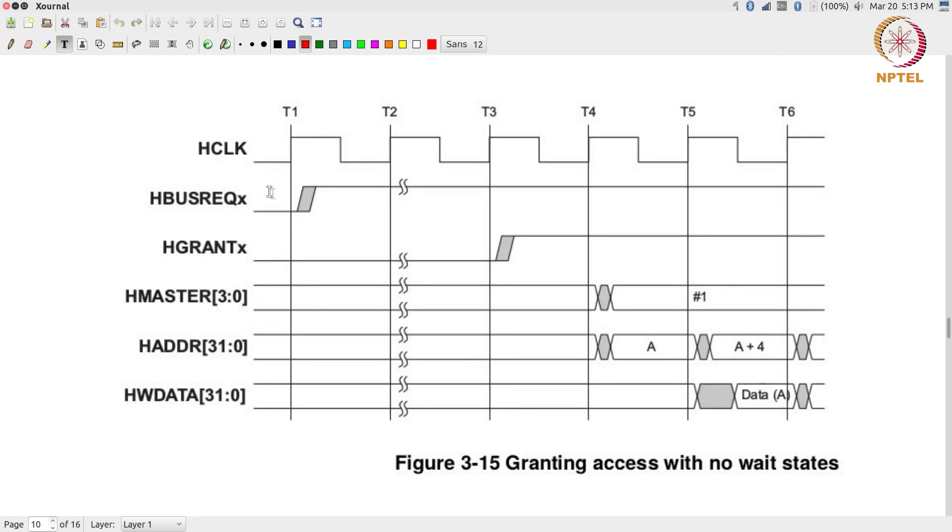And that is where the question of the bus request and bus grant signals come in. The bus request, assuming that you have multiple masters connected in a system, is something that a master can just pull high at any time. In this case during cycle T1 some bus master asserts the request signal.